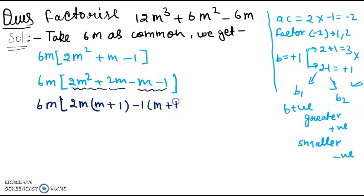Now students, it has become m plus 1. Mostly students are confused about the signs. So students, if you see here, if you have common then plus, if you have minus sign common then we change the sign. So students, you see here m plus 1 and m plus 1, same, so you take common. So 6m times m plus 1 times 2m minus 1.